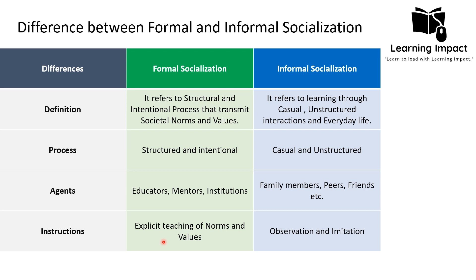Regarding instruction: formal socialization is based on explicit teaching of norms and values, with a focus on rules, regulations, and guidelines according to that institution or formal setting. For example, if someone joins a formal organization — whether in business or a government institution — they must learn that organization's rules and regulations before joining. In contrast, informal instruction is based on observation and imitation; children observe elders in the family and then imitate them in everyday life.